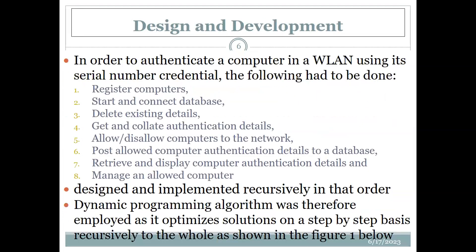The first part of the design science research was to design and develop the model. On the design part, in order to use the serial number for authentication purposes, as a preliminary step we have to first register computers, then start and connect a database which will contain the authentication details, then delete existing details so that when you log on to the network the new details are collected. Number four is to get and collect the authentication details. Number five is to allow or disallow a computer to the network based on registration.